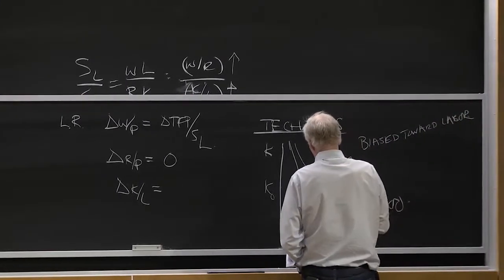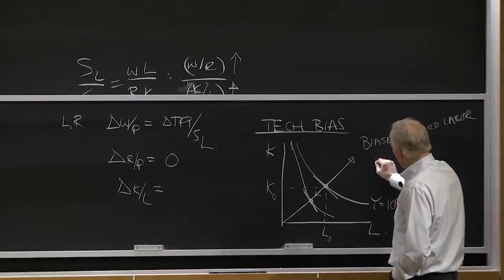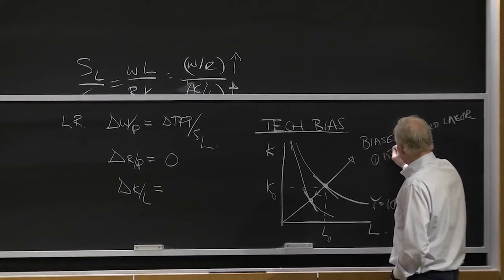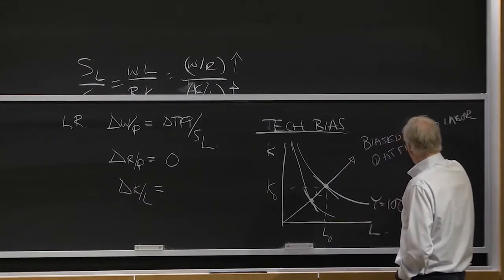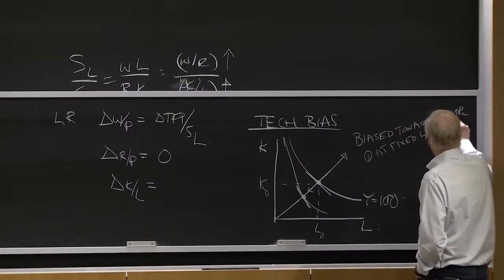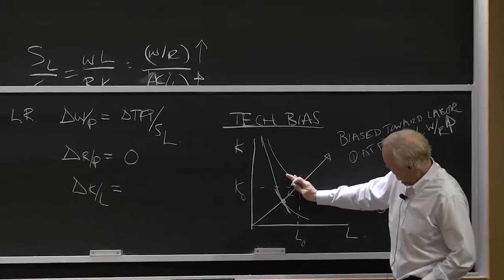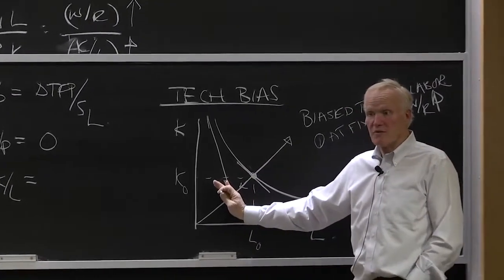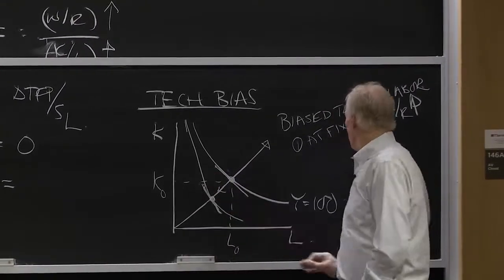And then think about it three ways, and then I'll stop here and I'll pick up from here next time. One, at a fixed L over K, W over R is rising. That is, the curve's getting steeper, which corresponds to W over R going up.